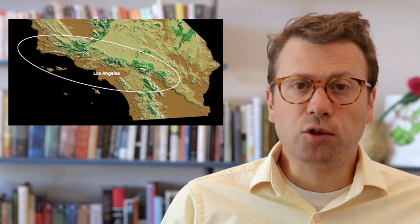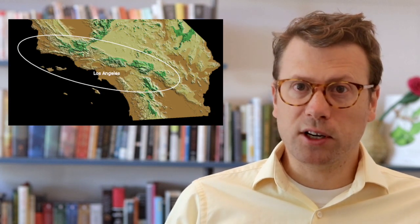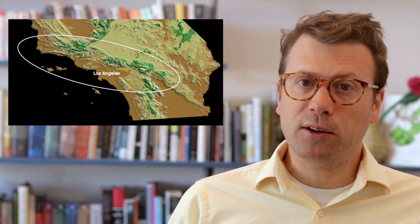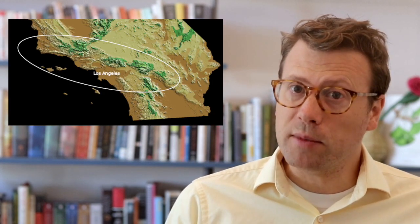They're called the Transverse Ranges because they trend east-west, perpendicular to most of the other mountain ranges in California, like the Sierra Nevada which runs north-south. I have a compass, follow me. These mountains were not always oriented east-west though. Paleomagnetic data suggests that the Transverse Ranges were rotated by the San Andreas and other faults in the area.